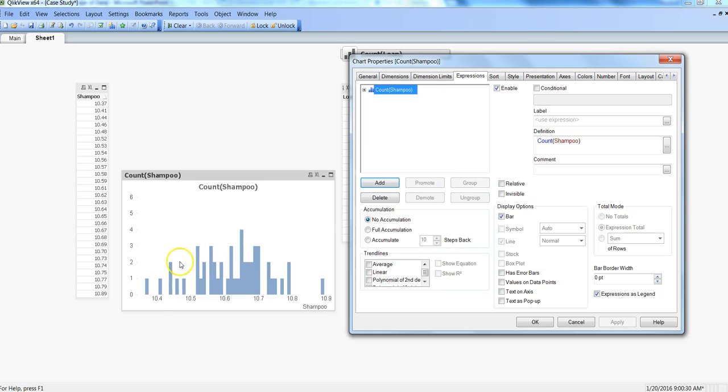After giving the dimension as shampoo, then in expressions what I am doing is I am just putting a count—so how many values are coming on this particular point—and then it is incrementing by 0.1. When you will just specify dimension and expression, it is very much possible that you should not get a chart like this.